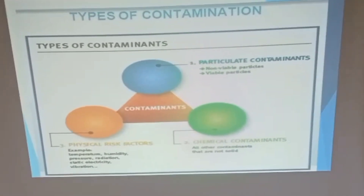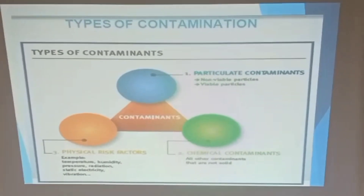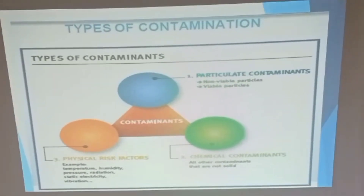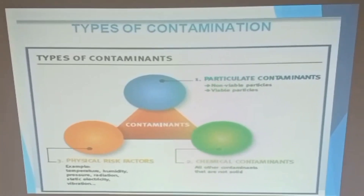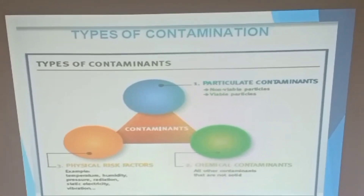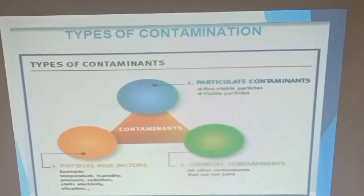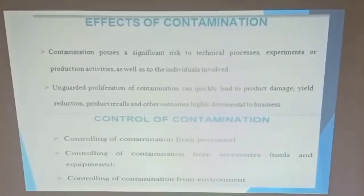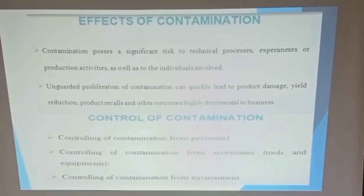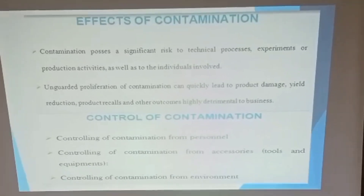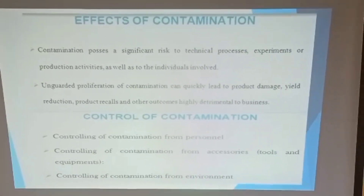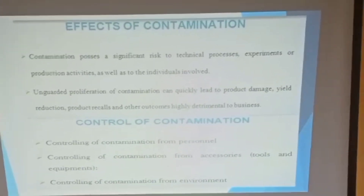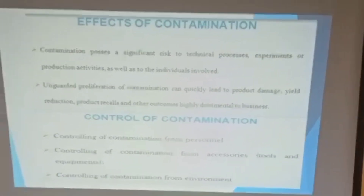Contaminants are divided into three types: particulate contaminants containing non-viable and viable particles; physical contaminants from temperature, pressure, radiation, vibration, and rain; and chemical contaminants from non-solid sources. Contamination causes significant risk to technical processes, experiments, and production activities. Ongoing proliferation of contamination can lead to product damage, yield reduction, and product loss.